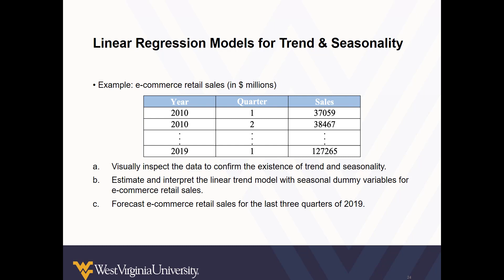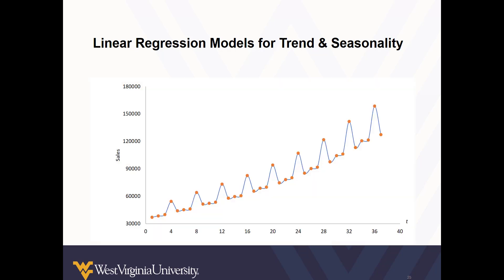So let's consider the e-commerce data set. Let's inspect the data to confirm there's trend and seasonality, estimate and interpret the linear trend model with seasonal dummy variables for e-commerce retail sales, and forecast e-commerce retail sales for the last three quarters of 2019. Here we see the orange dots plotted at the intersection of sales in each quarter. We see an overall trend of sales increasing, and we also see a peak every fourth quarter. This data clearly features both trend and seasonality.